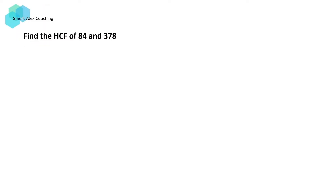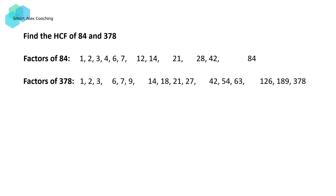Suppose we would like to find the highest common factor or HCF of 84 and 378. One method is to list out all the factors of 84 and 378. We then can go through the list and look for the common factors, and the highest number in this list becomes our highest common factor.